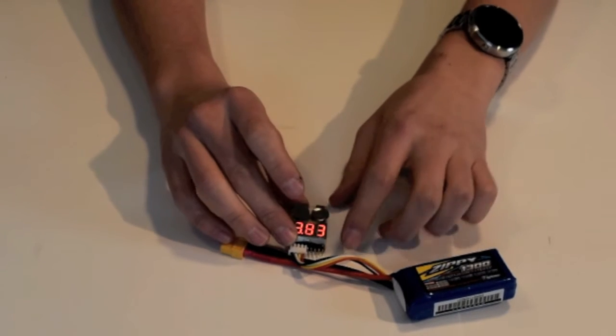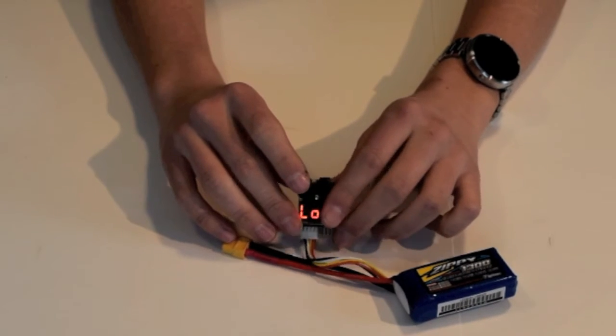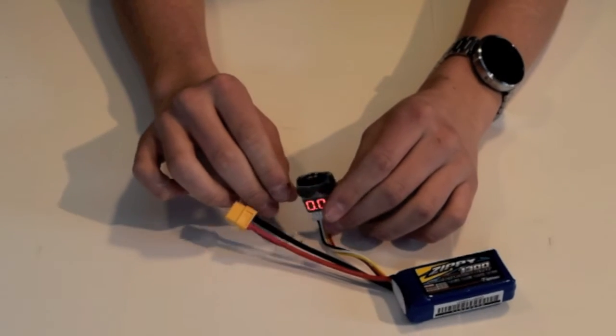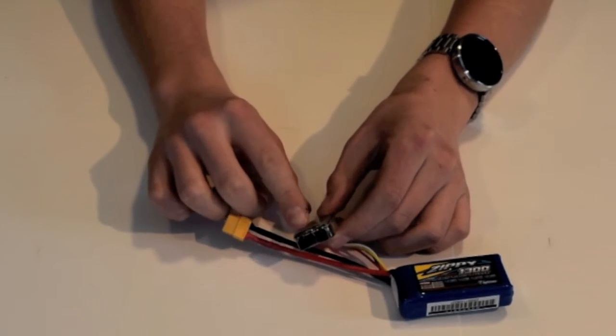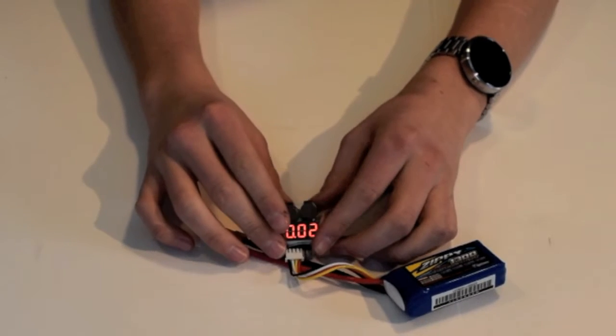So not only does this tell you the voltage, but you can also set an alarm. And how you're going to set that is by clicking this little tiny button at the top. So I'm just going to click that now to show you how to set the desired voltage.